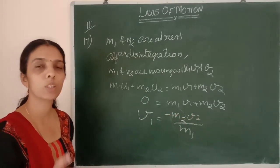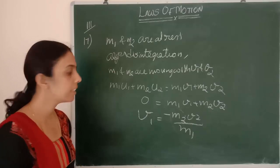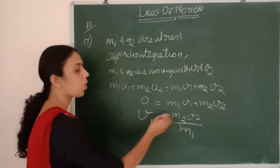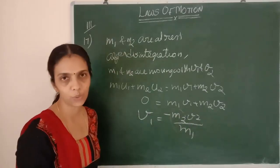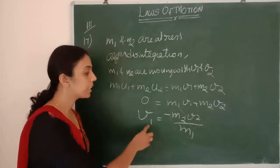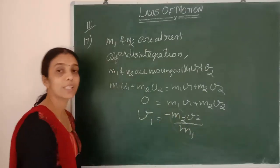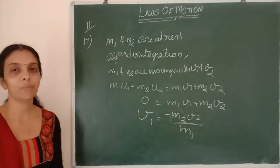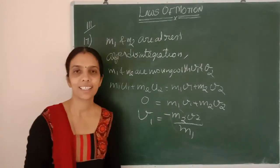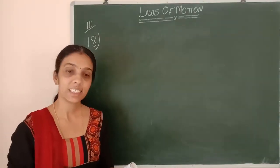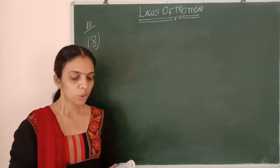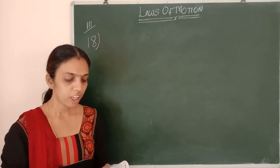Solving for v1 gives v1 = −(m2*v2)/m1. Since m1 and m2 are positive scalars, v1 is proportional to minus v2, meaning v1 is in the opposite direction to v2. This proves the two products move in opposite directions.